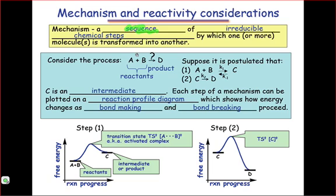Now, let's consider a hypothetical process A plus B goes to D, and let's say that we've hypothesized that the mechanism of this process occurs in two steps with the generation of an intermediate C.